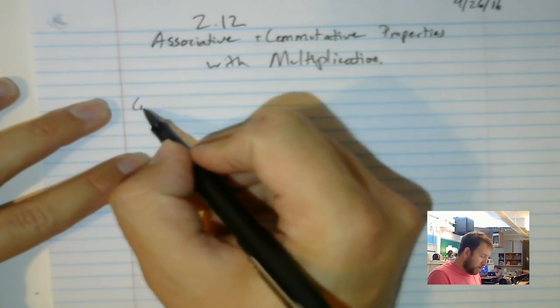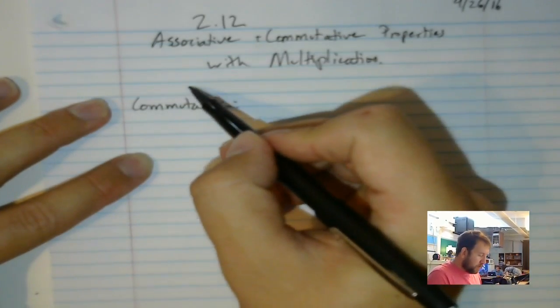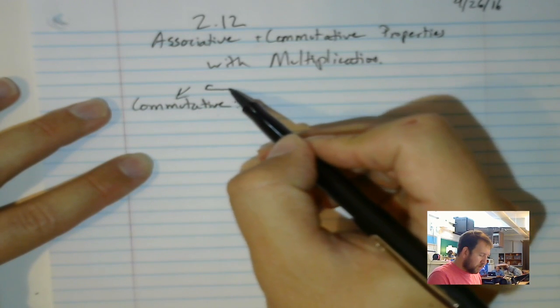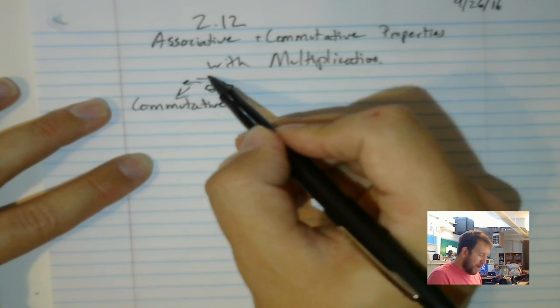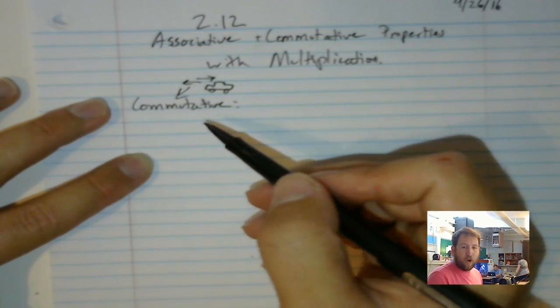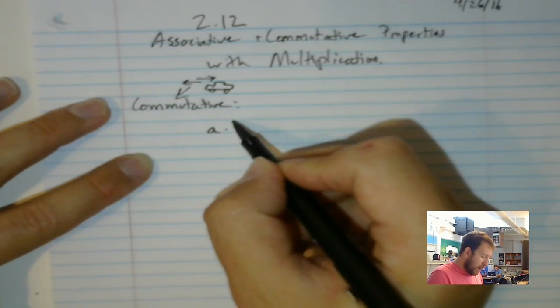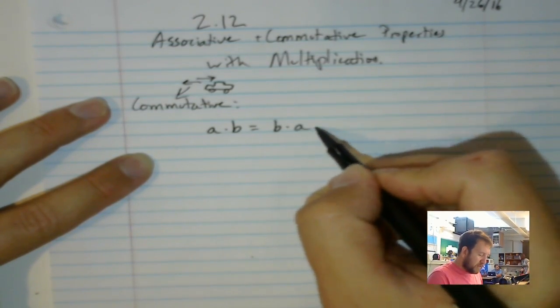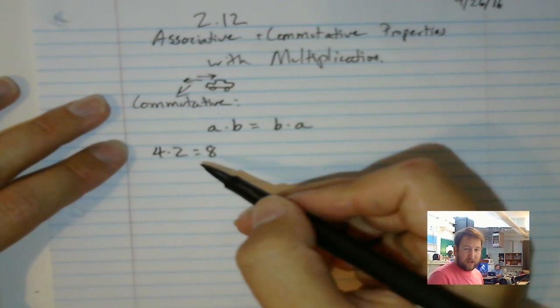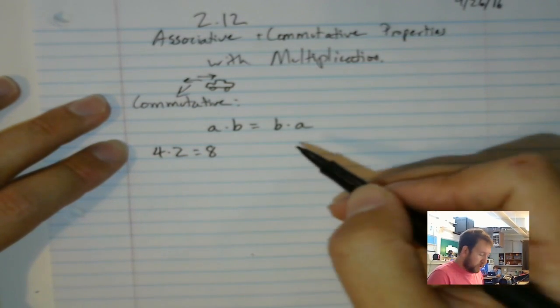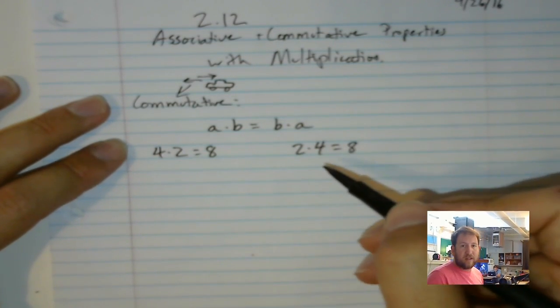So, write out the commutative for me. Commutative. And remember, that one is with the commute. That's where I'm going to get in my little car. Don't judge my car. And I'm going to drive somewhere and then I'm going to drive back. And that's going to represent that I can multiply things and move them around the equation as long as they're all being multiplied. So, I can say, as my rule, A times B is equal to B times A, right? So, I could write 4 times 2 is 8, which is also, ironically, not ironically, just equal to 2 times 4 equals still 8. And that kind of shows that it is equal.